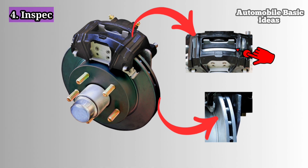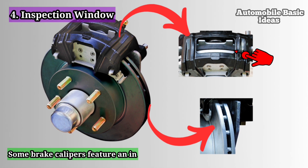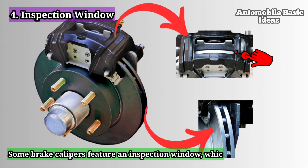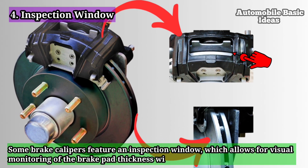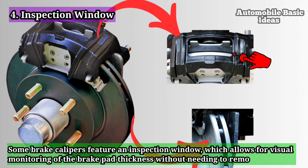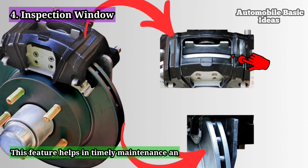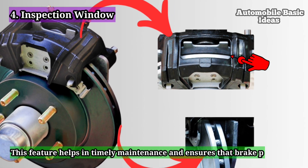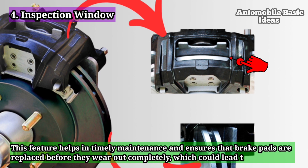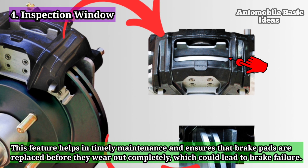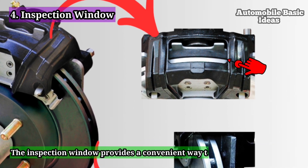Four: inspection window. Some brake calipers feature an inspection window, which allows for visual monitoring of the brake pad thickness without needing to remove the wheel. This feature helps in timely maintenance and ensures that brake pads are replaced before they wear out completely, which could lead to brake failure.